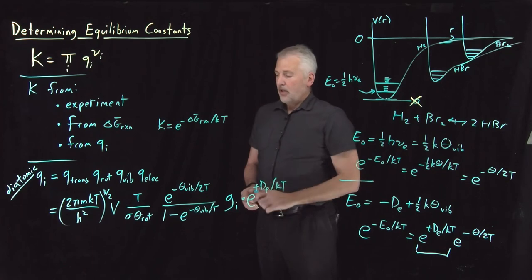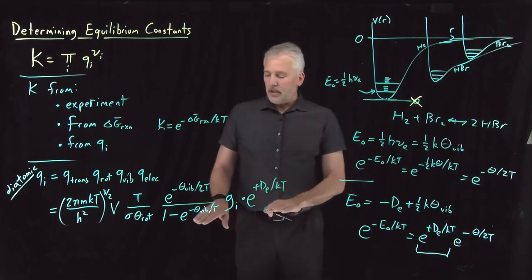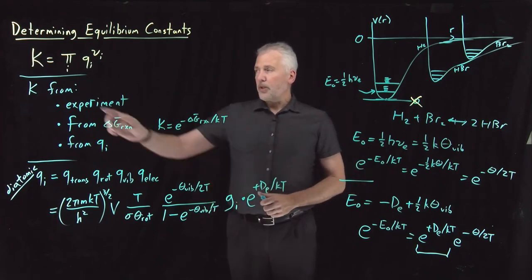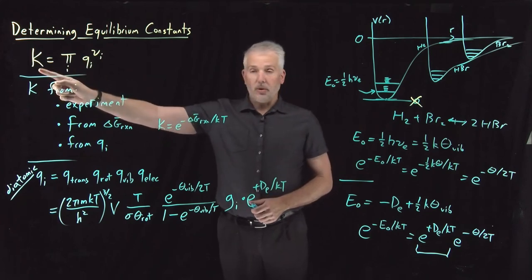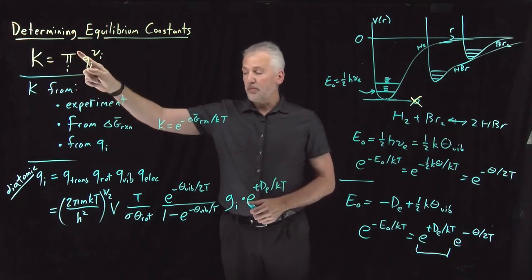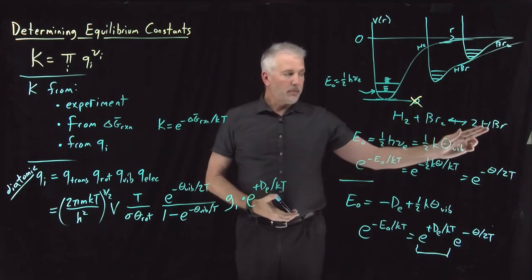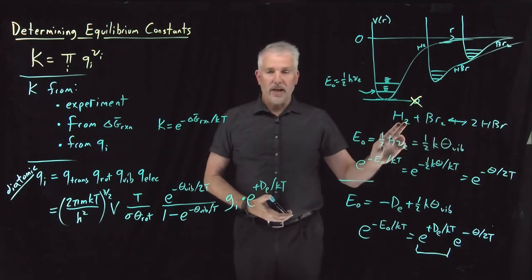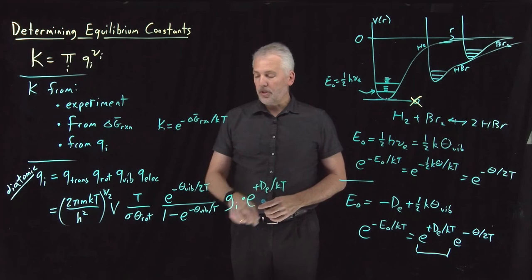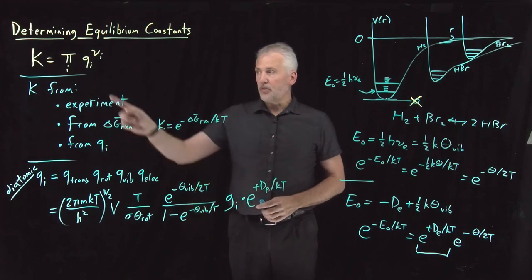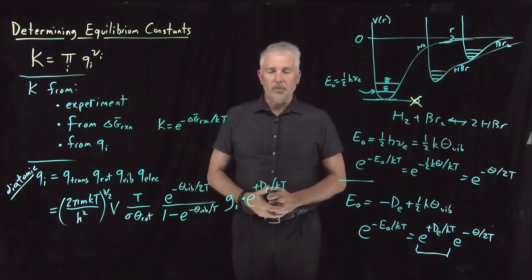Now that we've made that correction, we can see that all we need to do to calculate an equilibrium constant is to combine a bunch of these partition functions. If I have a bunch of diatomic molecules reacting as reactants and products, I just need to combine partition functions in this way to calculate an equilibrium constant, and that's what we're going to do next.